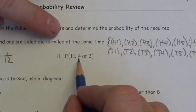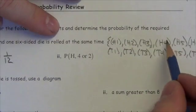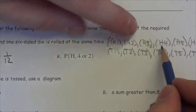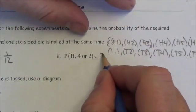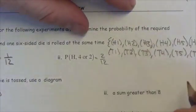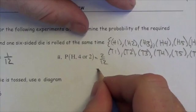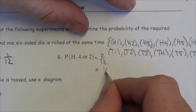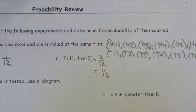Now this next one asks: what is the probability of getting a head and either a four or a two? Well, a head and a four or a two — there are two events out of the twelve total in our sample space, and that simplifies to a one-sixth probability.